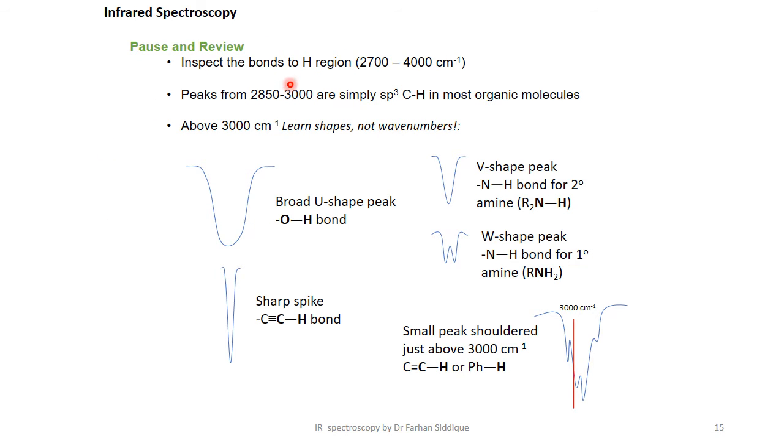For the bonds to hydrogen region, peaks from 2850 to 3000 are simply sp³. Above 3000 we can see the shapes are different. This is broad U-shaped peak for O-H bond, C≡C-H sharp peak V-shape peak for N-H bond, for primary amines small peaks shouldered just above 3000 cm⁻¹ for different aromatics and C=C-H groups.